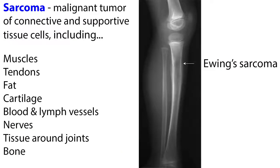Sarcoma is a malignant tumor of connective tissue and supportive tissue cells, including muscles, tendons, fat, cartilage, blood and lymph vessels, nerves, and tissue around joints. Sarcoma can also originate in the bone. Soft tissue and bone sarcomas are the main types of sarcomas.